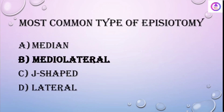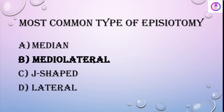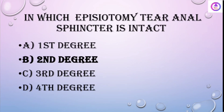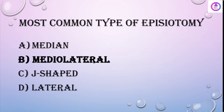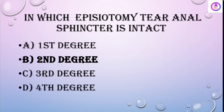The most common type of episiotomy is mediolateral. In which episiotomy tear is the anal sphincter intact? It is a second-degree tear, in which the anal sphincter is intact.